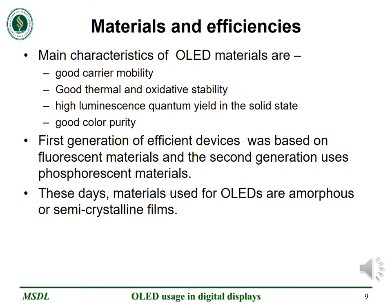The main characteristics of organic LED materials have been listed. The first generation of efficient devices was based on fluorescent materials where the internal quantum efficiency is limited to 25%. The second generation uses phosphorescent materials which were up to 4 times more efficient than fluorescent materials. Nowadays, materials used for organic LEDs are amorphous or semi-crystalline films. The efficiency is improved by doping the emitting layer with various organic dyes. Furthermore, by using these dopants, a wide range of colors from greenish blue to orange red can be obtained.